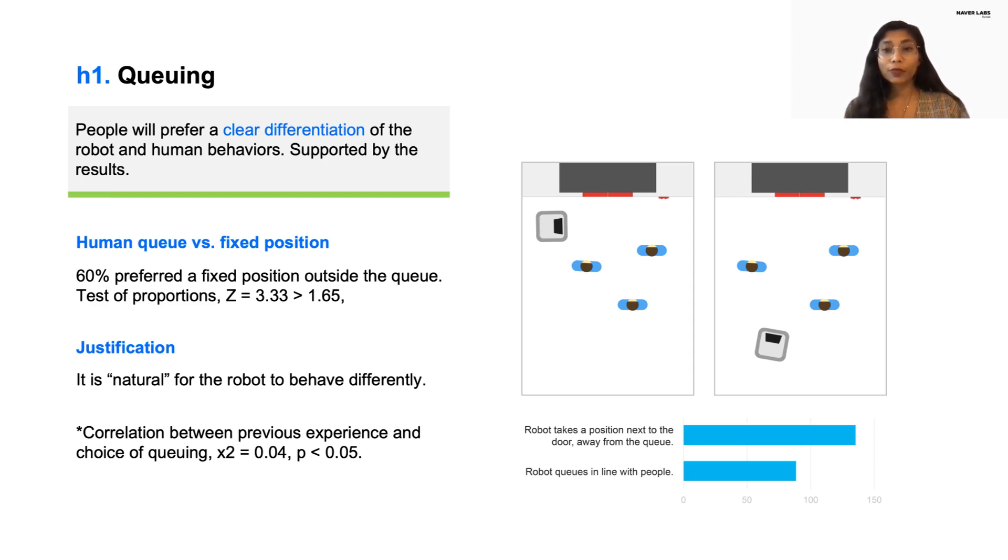Our participants expressed that it was natural for the robot to behave differently. We also found a correlation between previous experience and choice of queuing. People with experience preferred the first option compared to people without experience. We can speculate that participants with prior experience are more aware of the potential disruptiveness of the robot's movements.